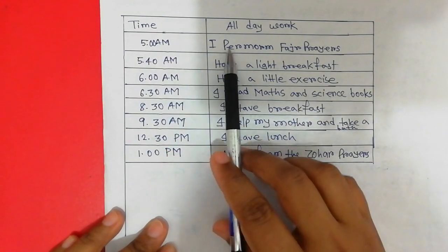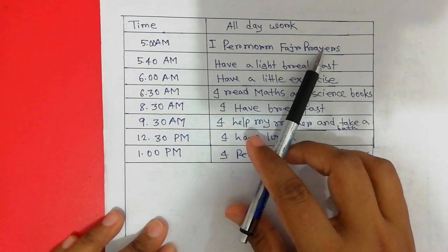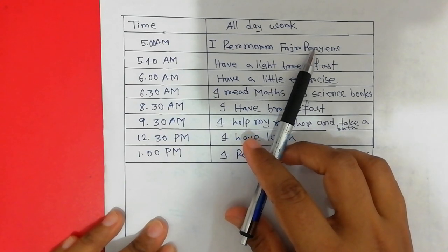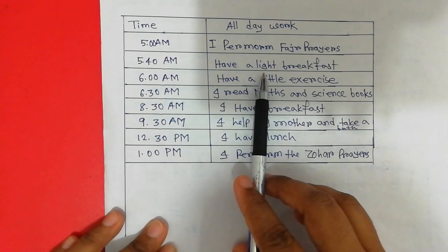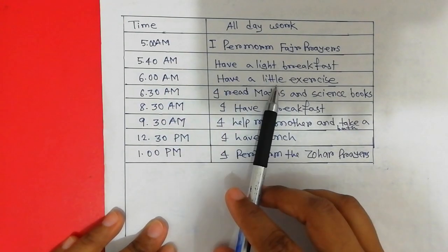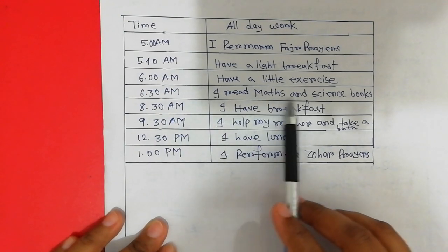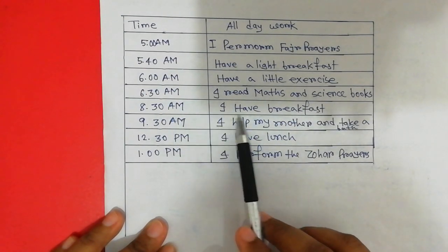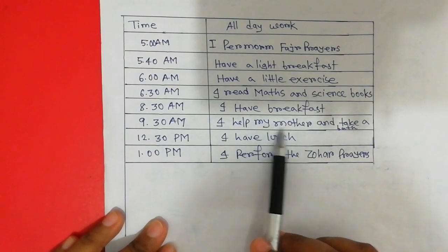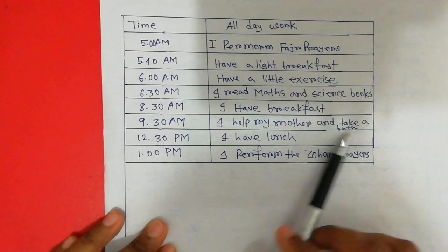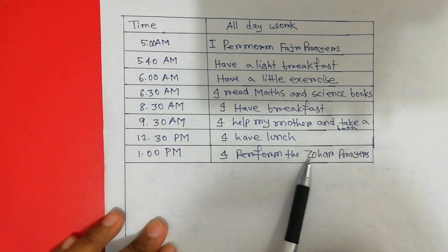5 AM: have a light breakfast. 6 AM: have a little exercise. Then at 6 AM, I read maths and science books. 8 AM: I have breakfast. 9 AM: I help my mother and take a bath. 11:30 AM: I have lunch. 1:00 PM: I perform the Johar prayers.